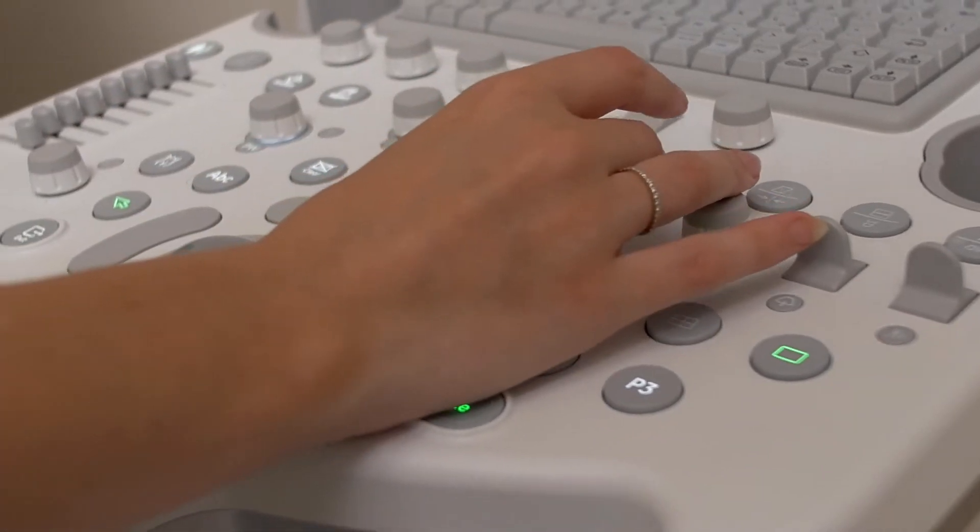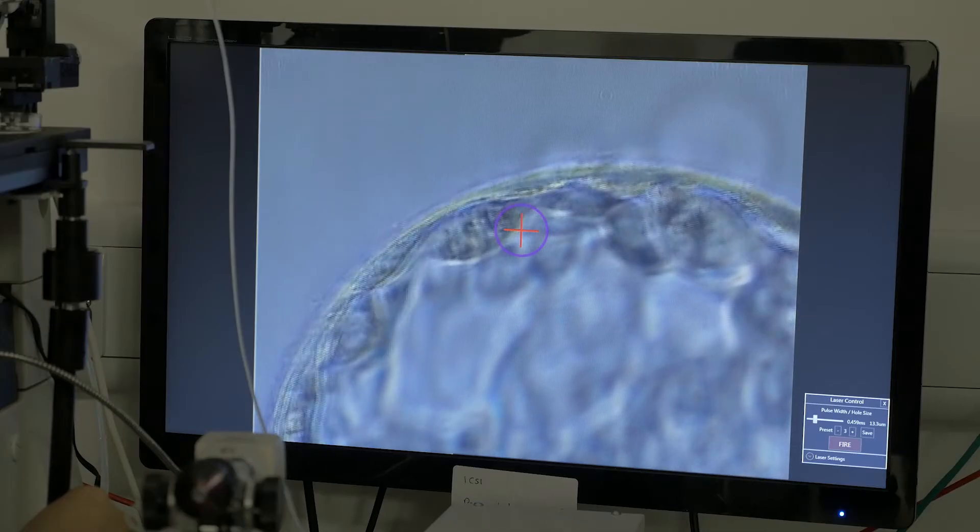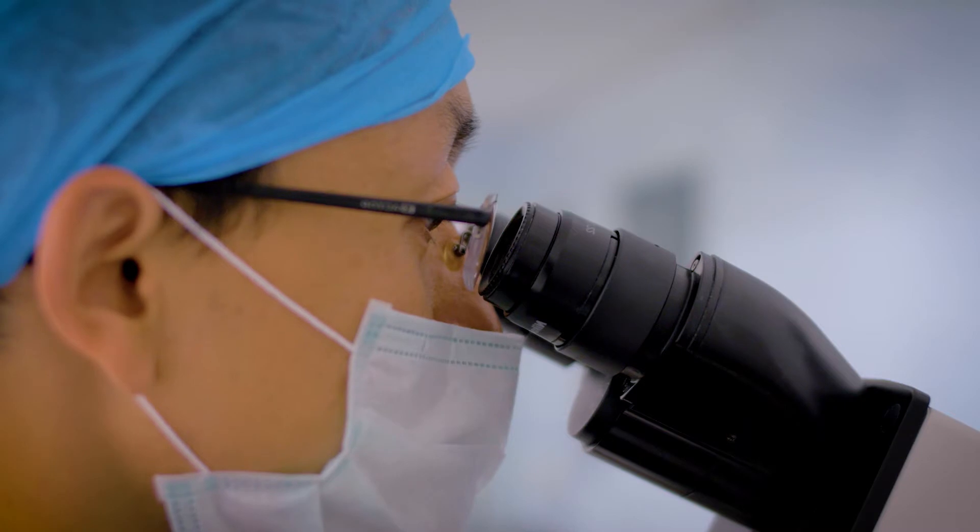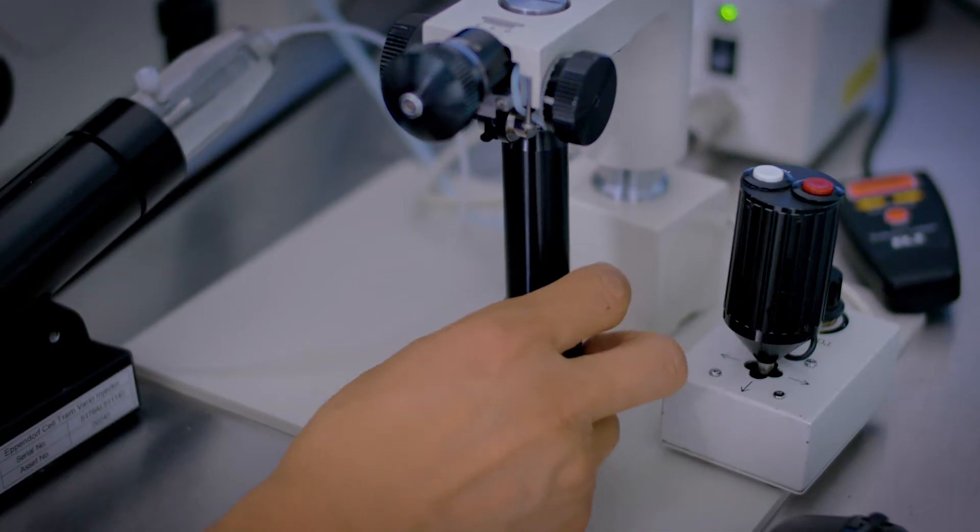So they go through the usual IVF steps. They go through super ovulation so that the woman produces a large number of mature eggs simultaneously. We try to fertilize as many of those eggs as possible and when we get to the stage of day five when they've become blastocysts.